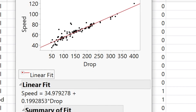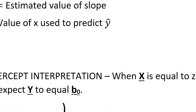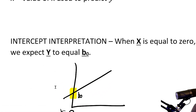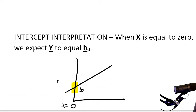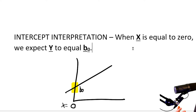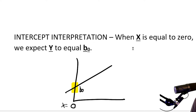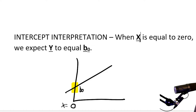When doing our interpretations of B0 and B1, it's very important to give context. Using rounded numbers — my intercept was 35 — so: when the drop of the rollercoaster is equal to 0 feet, we would expect the speed of the rollercoaster in miles per hour to be equal to 35. Notice the context: we're talking about a rollercoaster drop in feet and the speed in miles per hour. Context is key.